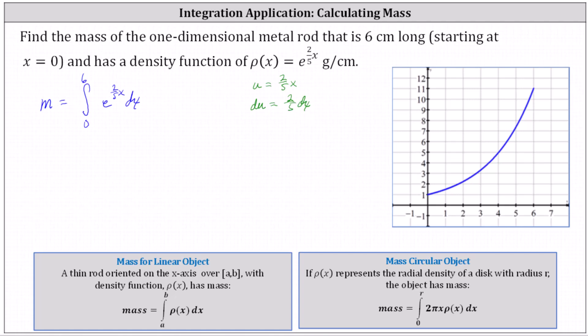We don't have two fifths dx, we have just dx. Let's go ahead and solve this equation for dx by multiplying both sides by five halves, which gives us five halves du equals dx.